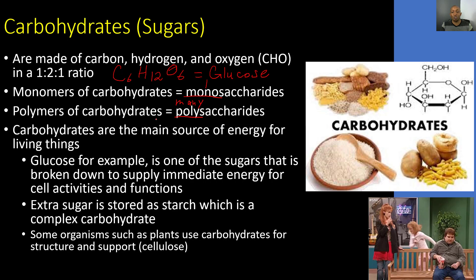Extra sugar is stored as starch, which is a complex carbohydrate. Some organisms such as plants use carbohydrates for structure and support — like cellulose, for example. Looking at carbohydrates such as rice, bread, and pasta, we can examine the structure of a carbohydrate, which has a hexagon or six-sided shape combined with carbon, hydrogen, and oxygen molecules.